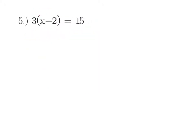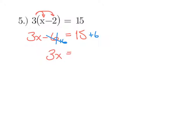This next one has subtraction in it, but don't be scared — our process is still the same. Take that 3 and distribute it to both terms: 3 times x is 3x, and 3 times 2 is 6. Now it's a regular equation, so solve it like one. Since I see minus 6, the inverse is plus 6, so I'll add 6 to both sides. Negative 6 plus 6 cancels, leaving 3x. On the right, 15 plus 6 is 21. Divide both sides by 3, so x equals 21 divided by 3, which is 7.